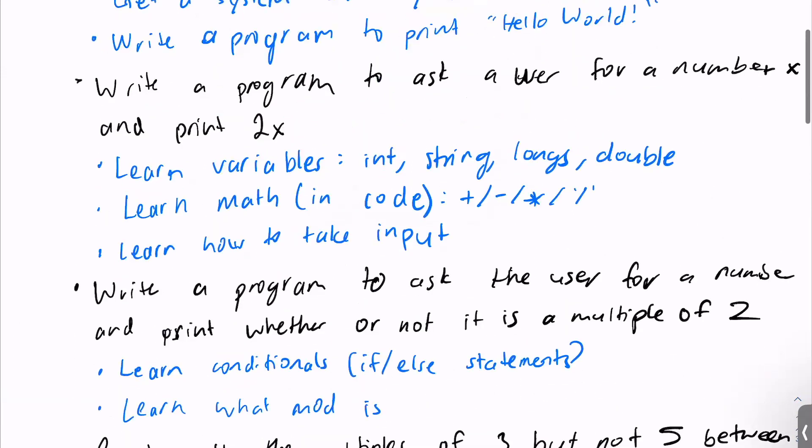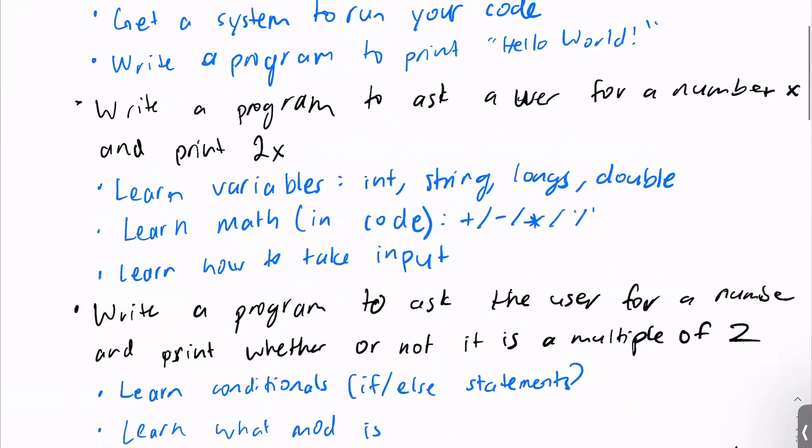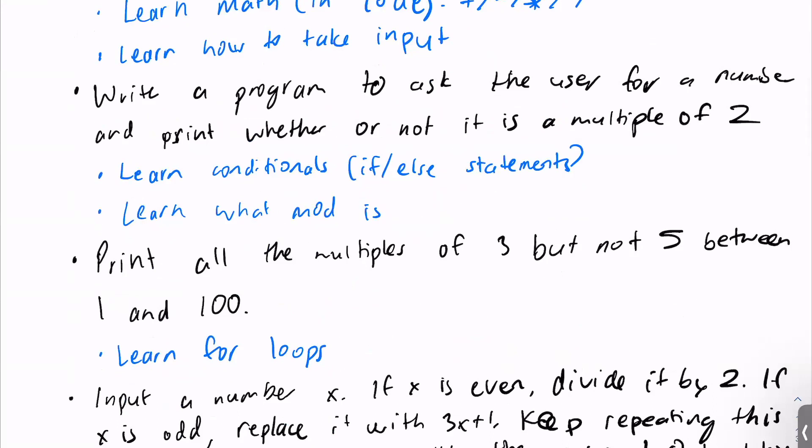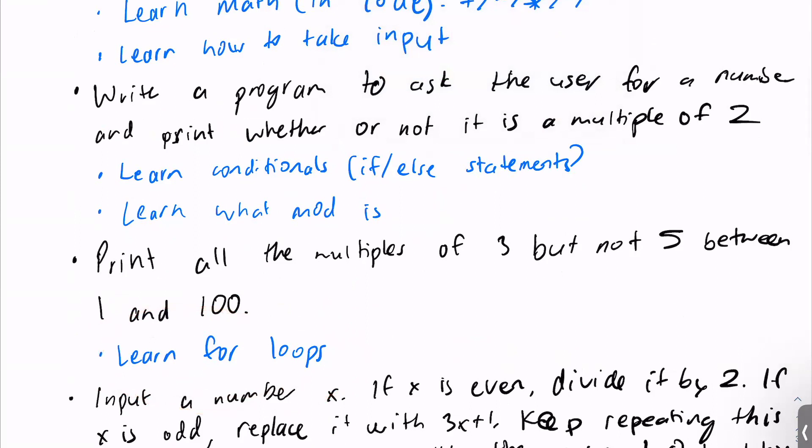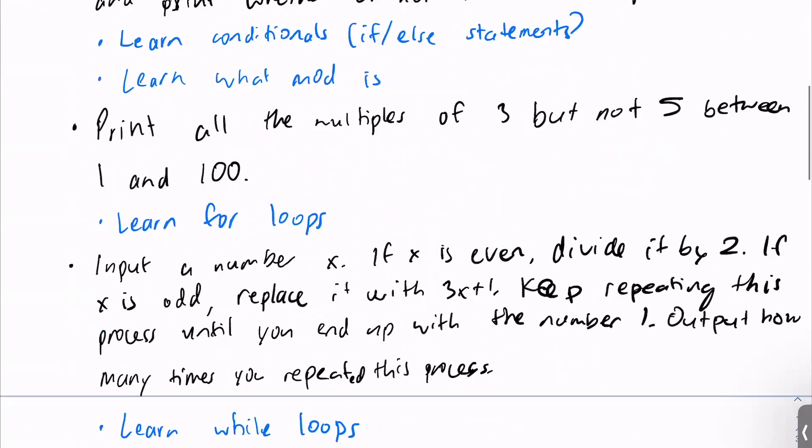So once you do all of these things, you should have a pretty fundamental understanding of the different basics of coding. And you should have a pretty good understanding to get started with some competitive programming questions. So I want to reemphasize that the idea is not just to solve these problems. For each of these problems, you should be solving a bunch of similar problems. For example, we say learn for loops. This is going to mean that you're going to solve a bunch of problems on for loops until you learn for loops. We say learn conditionals, you should be solving multiple problems on conditionals. Learn how to take input. Again, multiple problems on how to take input. If you learn all of these things, this should give you a basic understanding of how to start coding.